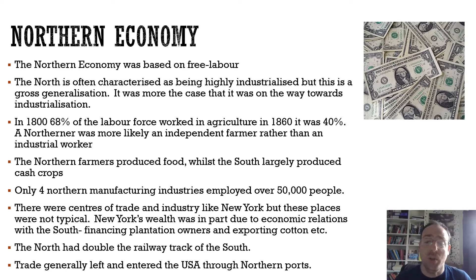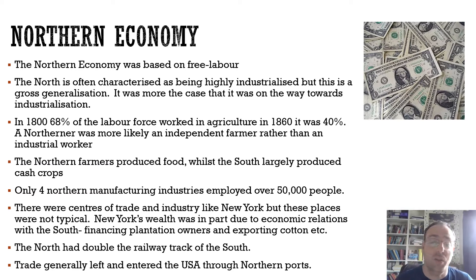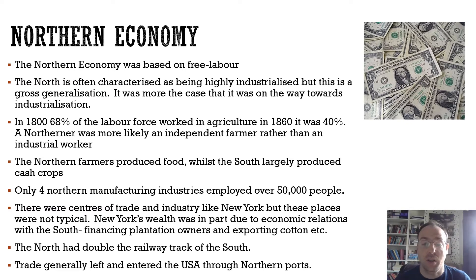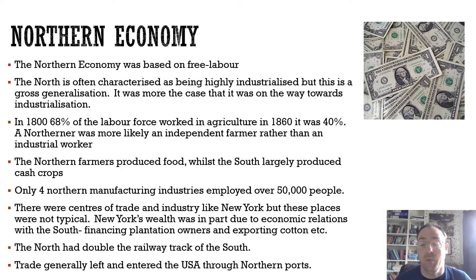One of the other key things about the northern economy when it comes to agriculture is that northern farmers produced food, whilst a lot of the southern farms were producing cash crops such as cotton, tobacco and sugar. In the north they were growing wheat and corn and things like that, and raising large amounts of animals as well.